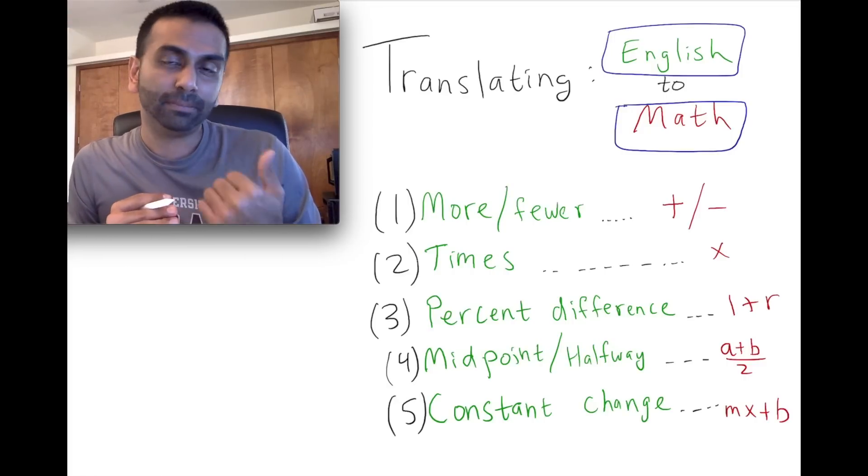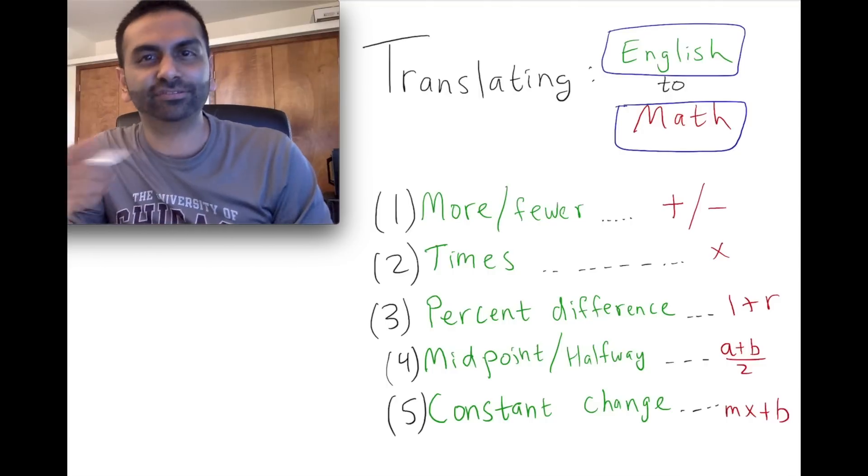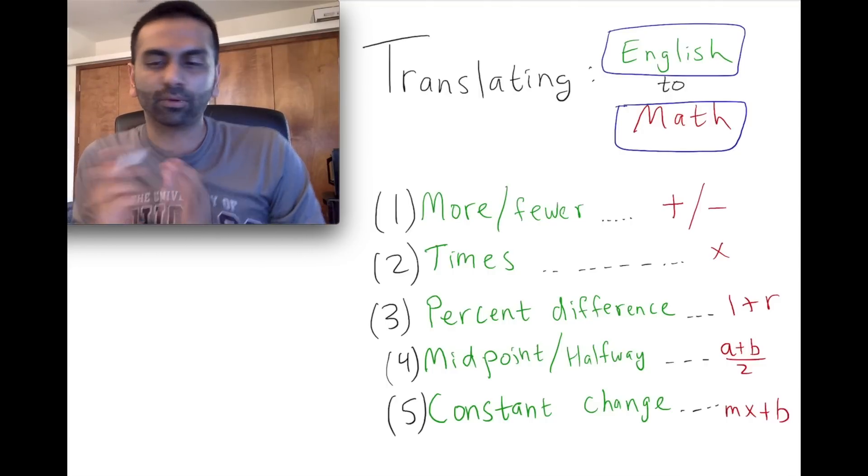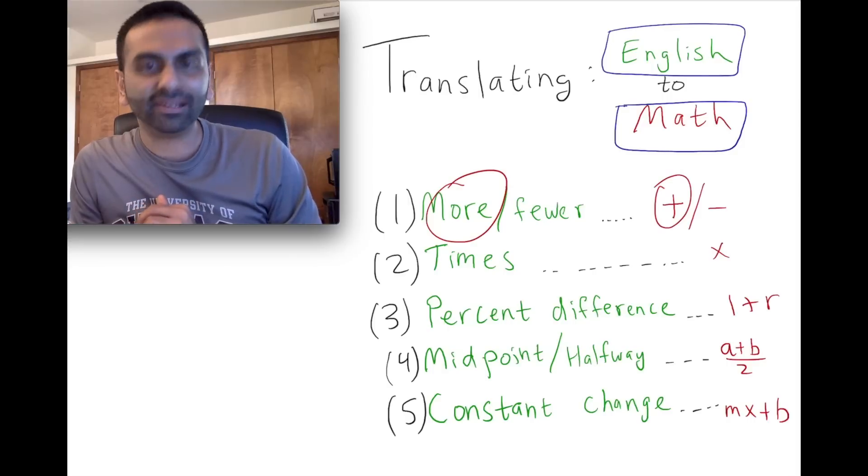that's just going to be b equals four plus j, or j plus four. Four more. So really the word 'more' translates into a plus sign.